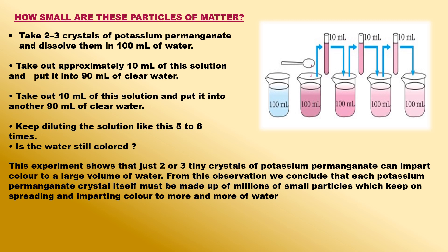In this way, we get a very dilute solution of potassium permanganate in water, but the water is still colored. This experiment shows that just two or three tiny crystals of potassium permanganate can impart color to a large volume of water. From this observation we conclude that each potassium permanganate crystal must be made up of millions of small particles which keep on spreading and imparting color to more and more water on dilution.